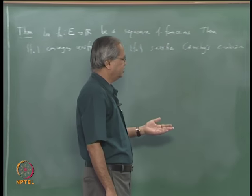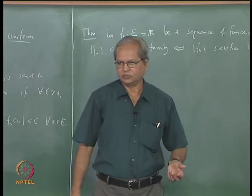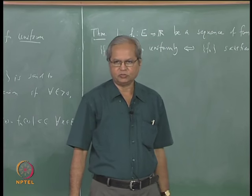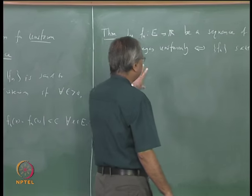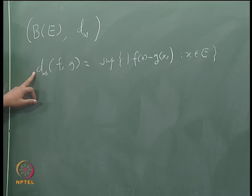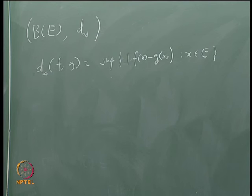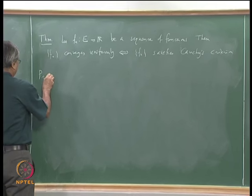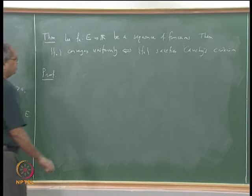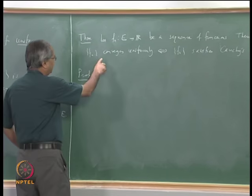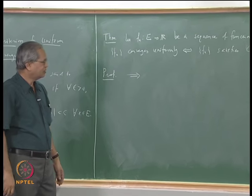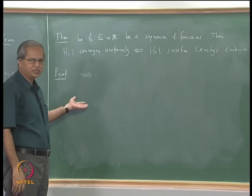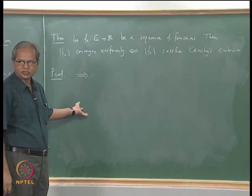In any metric space, if a sequence converges it is a Cauchy sequence. The converse is true if the metric space is complete. So this theorem essentially says that B(E) is a complete metric space. Now let us go to the proof. The forward direction — that if f_n converges to f then it satisfies Cauchy's criteria — is straightforward to prove.